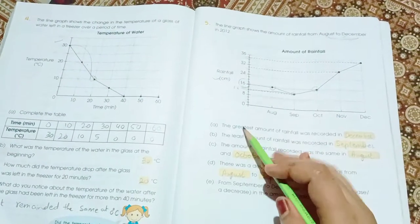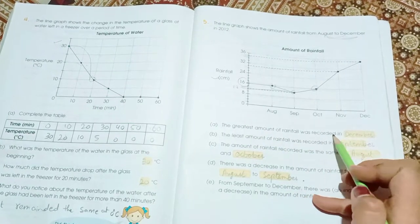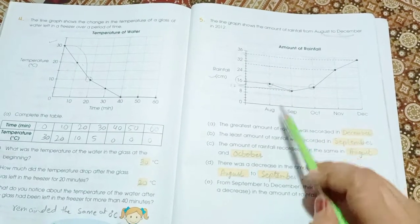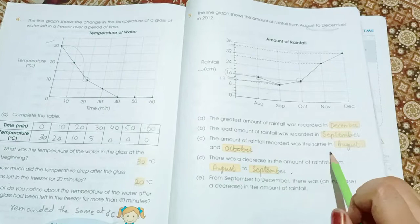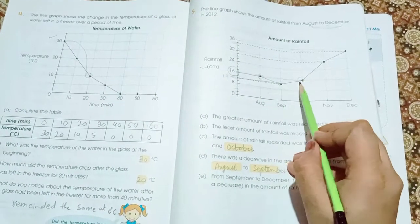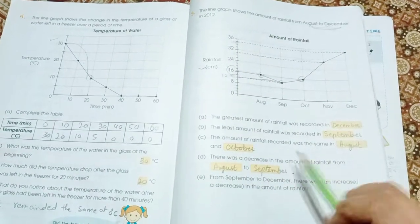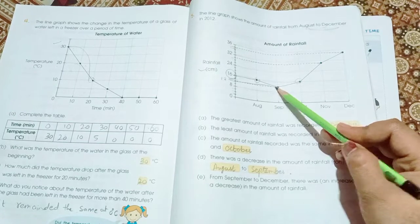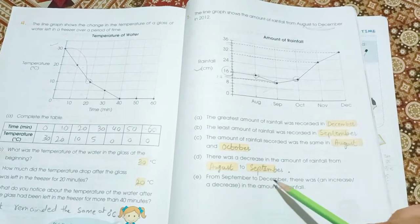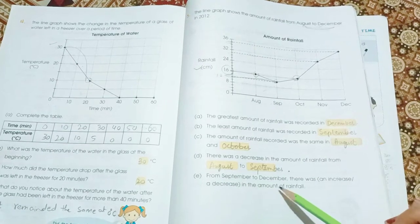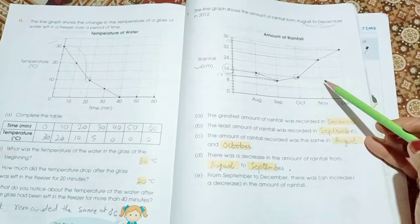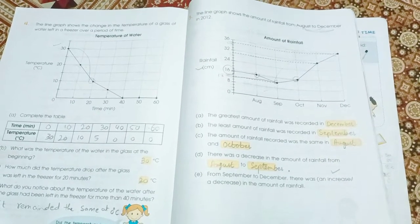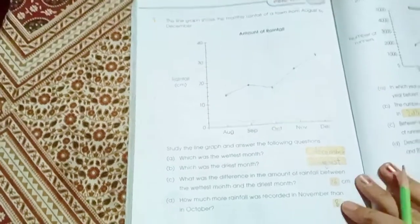Page number 244. Here we have to read the graph and fill the answers. The greater amount of rainfall was recorded in December. The least amount of rainfall was recorded in September. The amount of rainfall recorded was the same in August and October. There was a decrease in the amount of rainfall from August to September. From September to December there was an increase in the amount of rainfall.